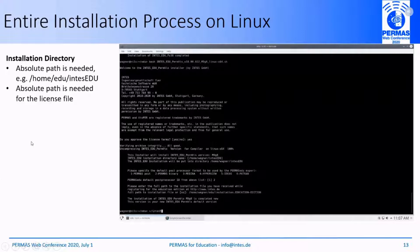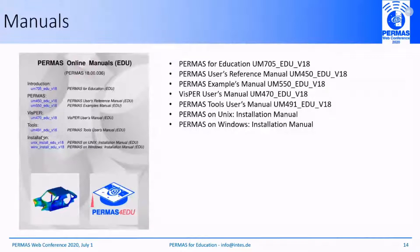The next point is the manuals. The available manuals for the Education Edition include: an introduction to PAMAS for Education, the user reference manual (same as the maintenance version), the examples manual (same as the maintenance version), the VISPA user manual, installation manuals for the operating systems, and the tools user manual containing information about PERMAS graph, PERMAS control center, and more.